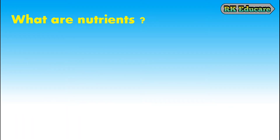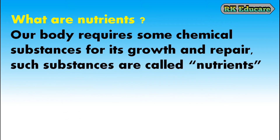What are nutrients? Our body requires some chemical substances for its growth and repair. Such substances are called nutrients. There are five kinds of nutrients available: carbohydrates, proteins, fats, vitamins and minerals. Along with these, our body also requires water and roughage.